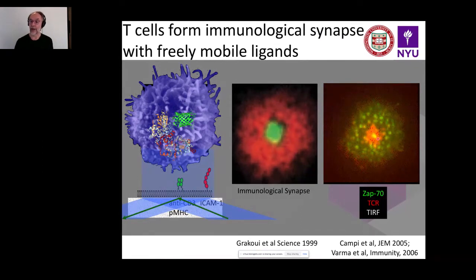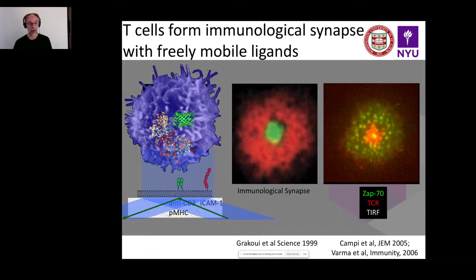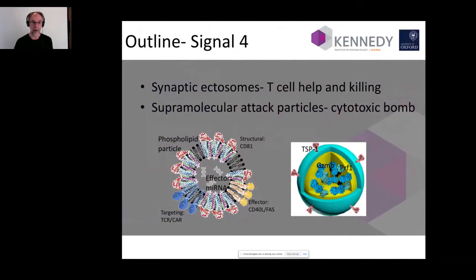One question is: what are all these T-cell receptors doing in the center, apparently no longer signaling, yet right in this central component of the synapse nominally involved in communication? What other effector mechanisms could be released at this interface that we could capture using the supported planar bilayer system? Importantly, in a normal two-cell system anything transferred could be internalized and hidden by the receiving cell, but in the planar bilayer system anything received by the artificial antigen-presenting cell can be captured and studied after the T-cell is removed.